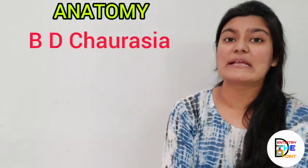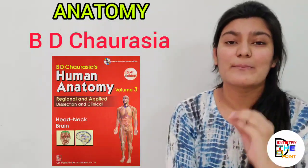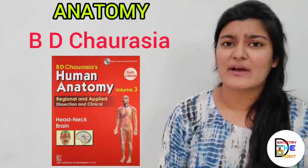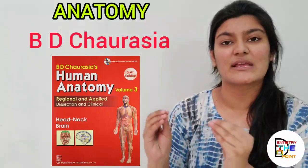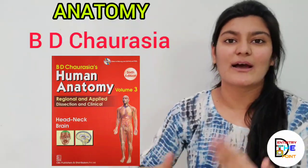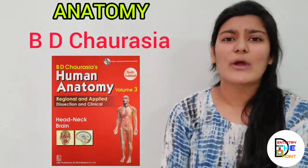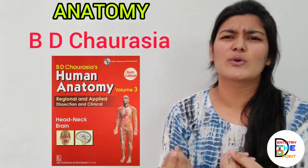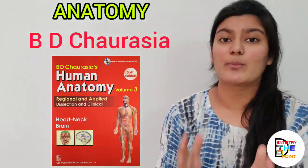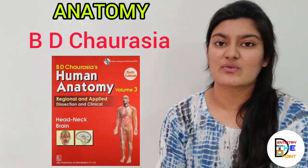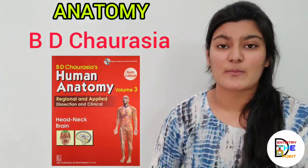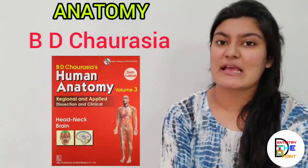Let's start with the first subject: anatomy. The standard book is BD Chaurasia. This is actually the standard book and also the simplest book — it's a very good book. It has very good diagrams, very well-written explanations, and covers just what a dentistry student needs. It comes in three volumes. Edition doesn't matter much as small things get added or removed, but BD Chaurasia is best because the diagrams are illustrative — the kind you can actually draw in your exams.